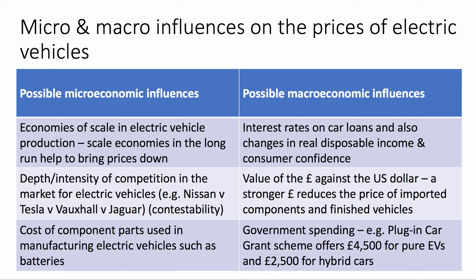You could also bring in a fiscal policy point — the government can increase its own spending, for example in funding research. But crucially, the government is now offering a cash incentive for consumers called the plug-in car grant scheme. My latest figures show that if you buy a pure electric vehicle you can get a cash grant of £4,500, and if you buy a hybrid car that comes down to £2,500. So there's fiscal policy — a macro influence on demand in the market and on the prices of cars in the industry.